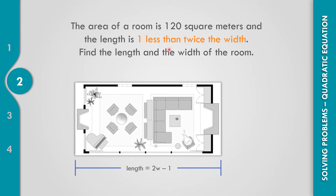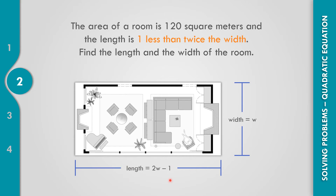The length is 2W minus 1 — that is, twice the width minus 1, because it is 1 less than twice the width. And this one could be the width. So if this is the width and this is the length, let us identify the dimensions of the room.